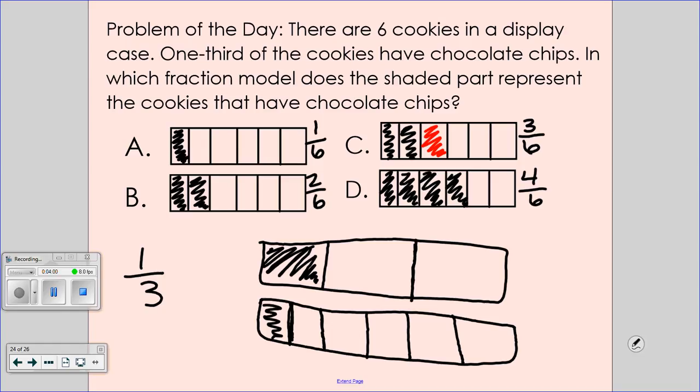It may be B because if you shade in one more, then they'll both be even. Are those equal? Yes. So what is an equivalent fraction to one-third? Nathan? Two-sixths.